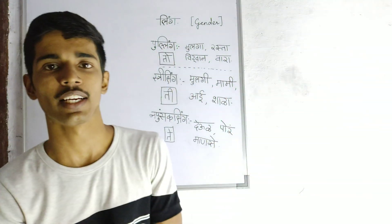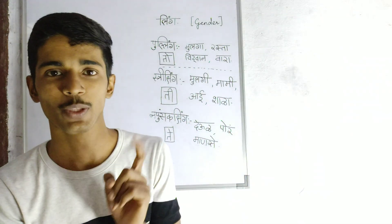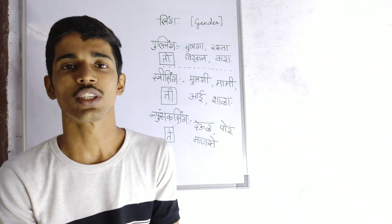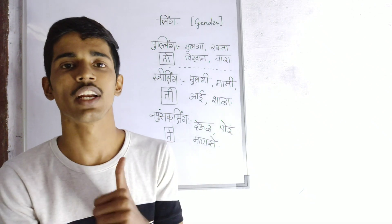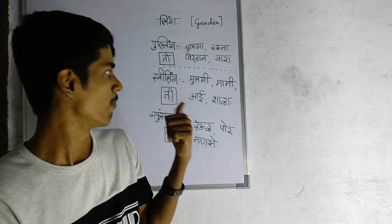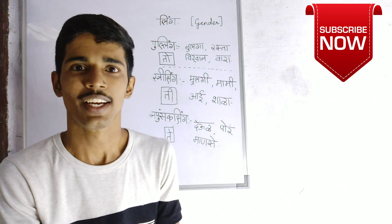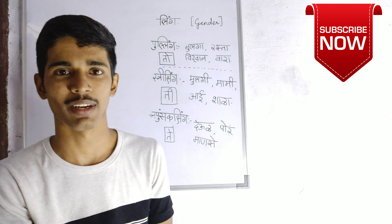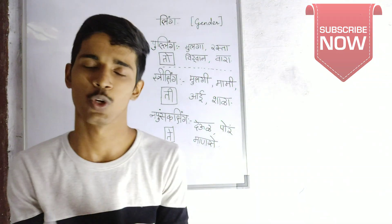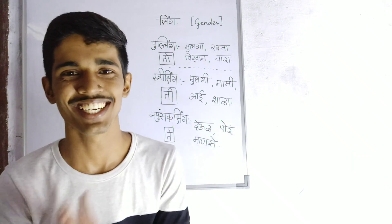For Pulling, I have written: mulga, rasta, vidwan, and wala. These are Pulling words. For Strilling, I have written: mulgi, mama, aai, and shara. For Napusakaling, I have written: dev, poor, man, sing.